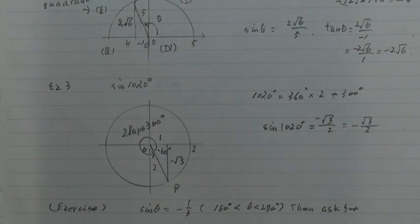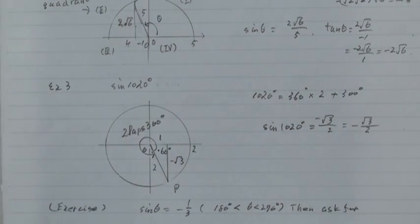And next exercise. Sine theta equals minus 1 over 3, and theta is 180 degrees more than theta, theta is more than 270 degrees, then ask for cos theta and tan theta.